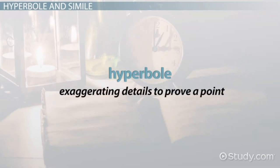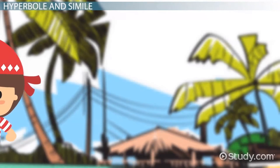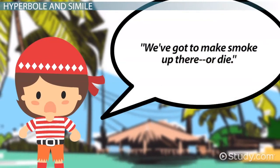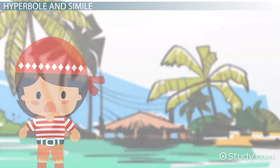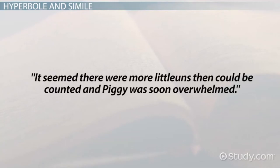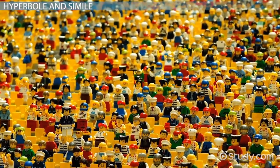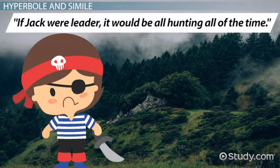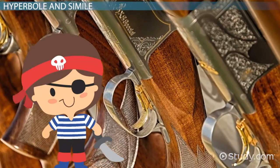Hyperbole is exaggerating details to prove a point. Golding uses hyperbole throughout the book to convey strong messages. For example, one of the kids says, "We've got to make smoke up there, or die." Would they really die? Hardly. But Golding wrote this to express how desperately they needed a signal. We are also given the sentence, "It seemed there were more little ones than could be counted, and Piggy was soon overwhelmed." That clearly means there were a lot of younger children, but surely they could count them all. And the sentence, "If Jack were a leader, it would be all hunting all of the time." Would there really be hunting all the time? That's exaggerated.